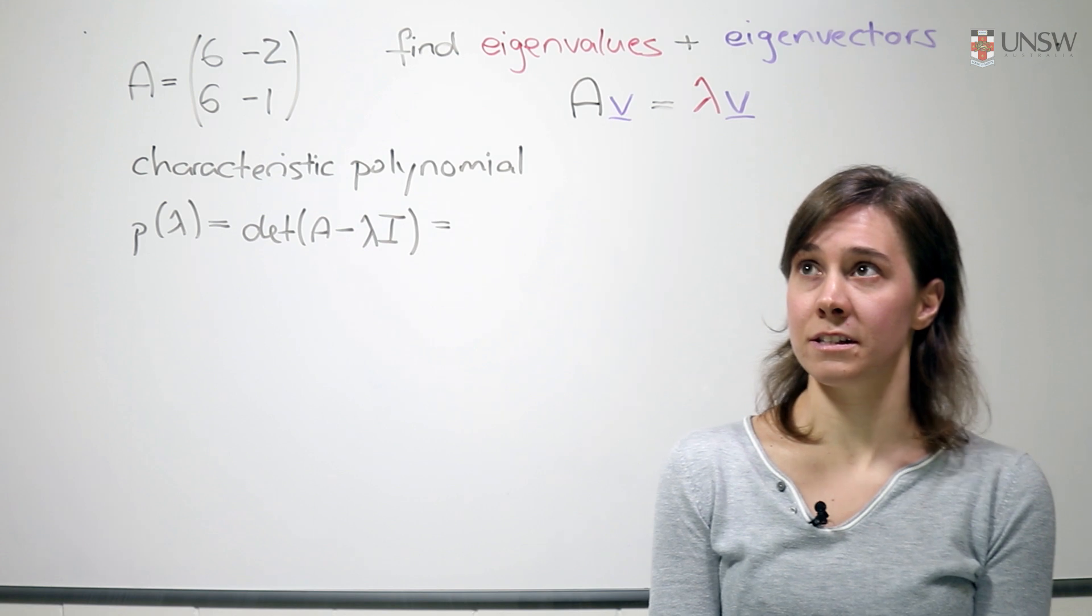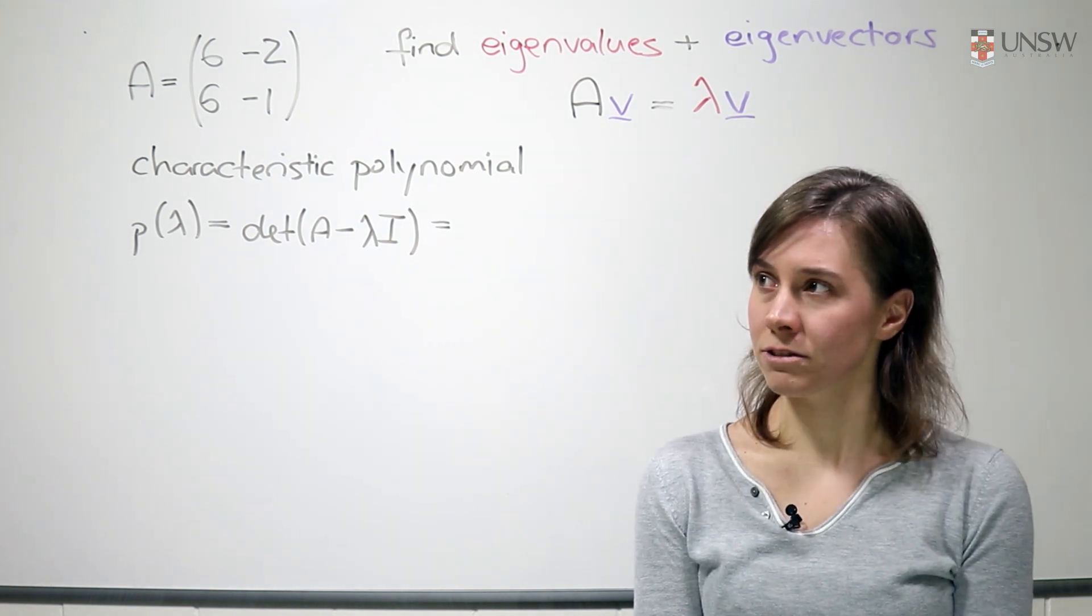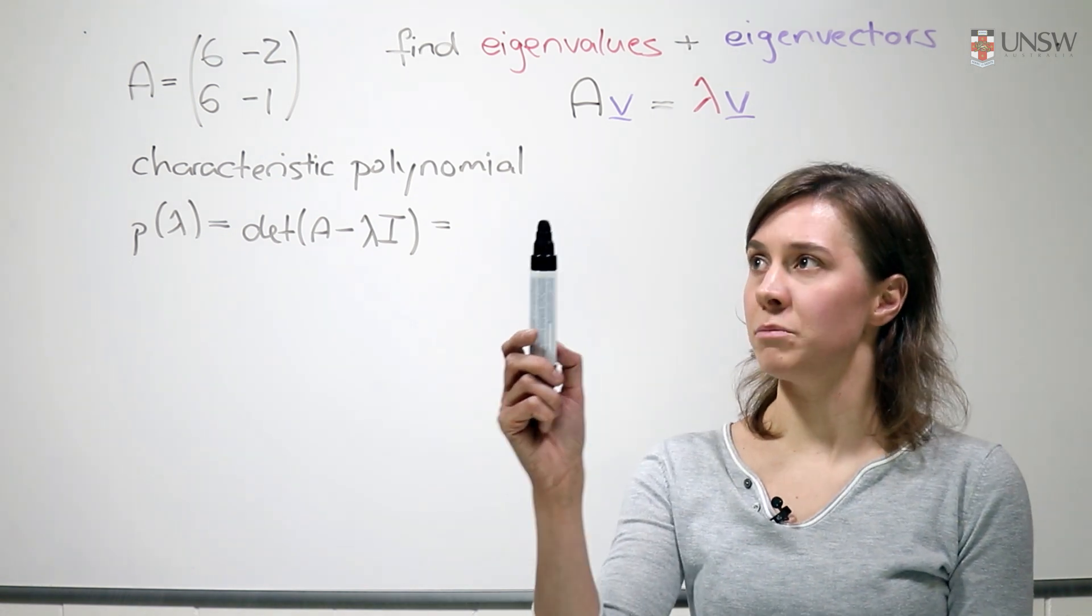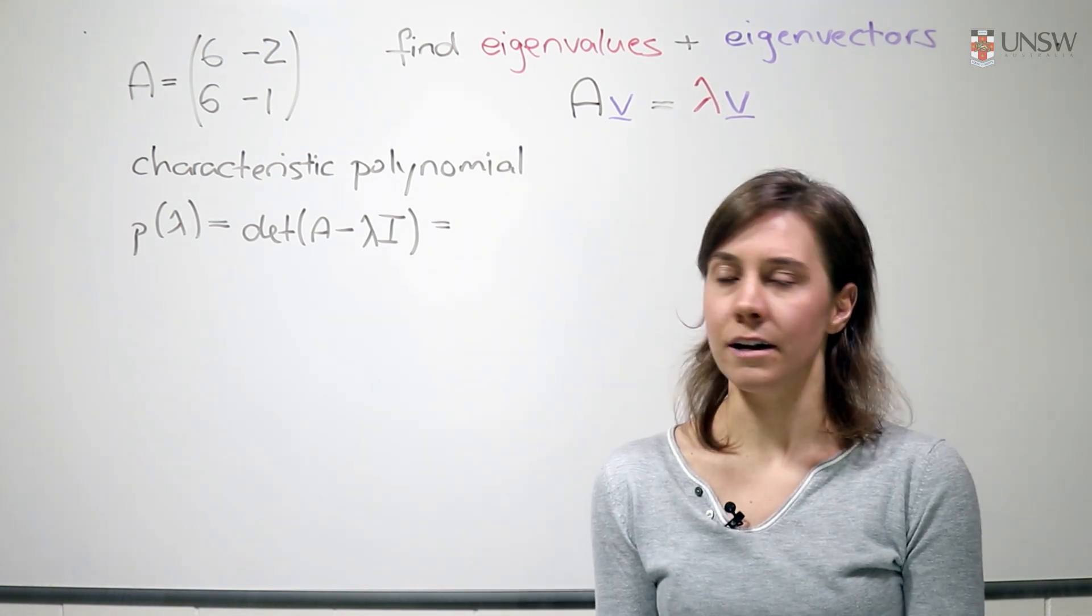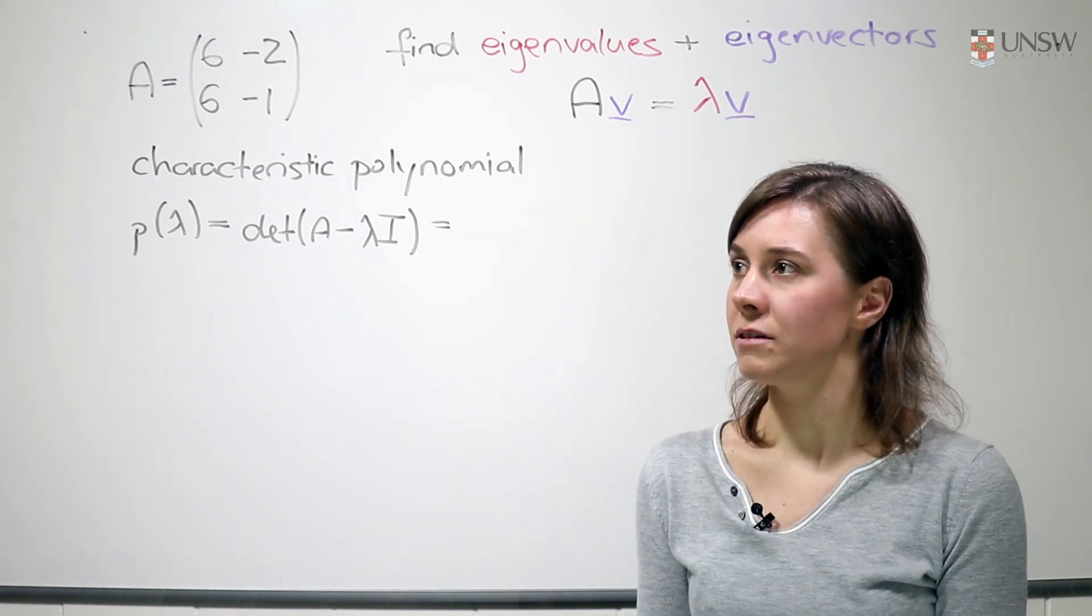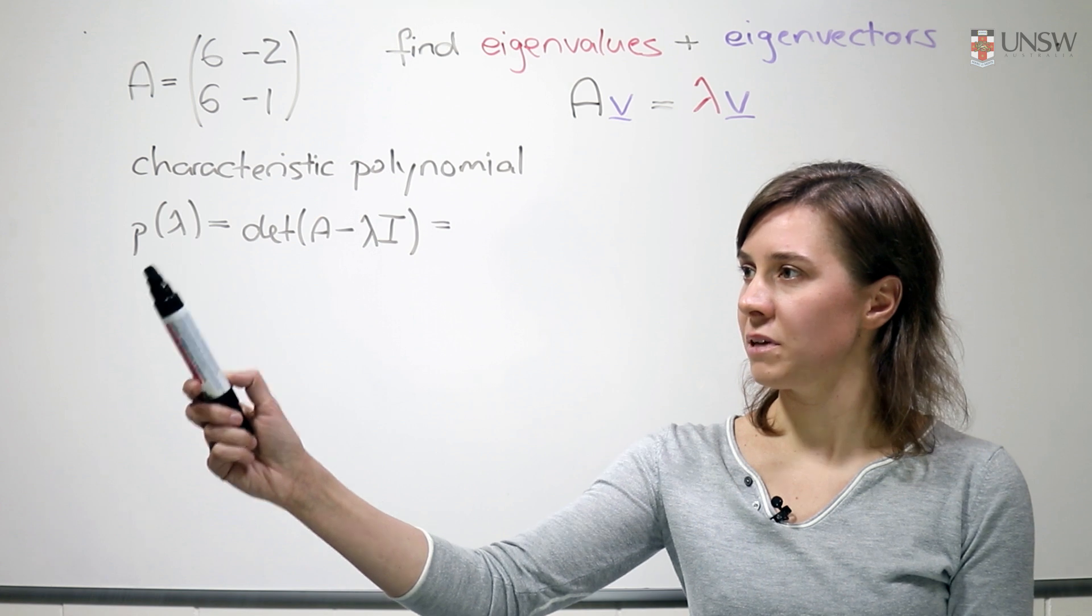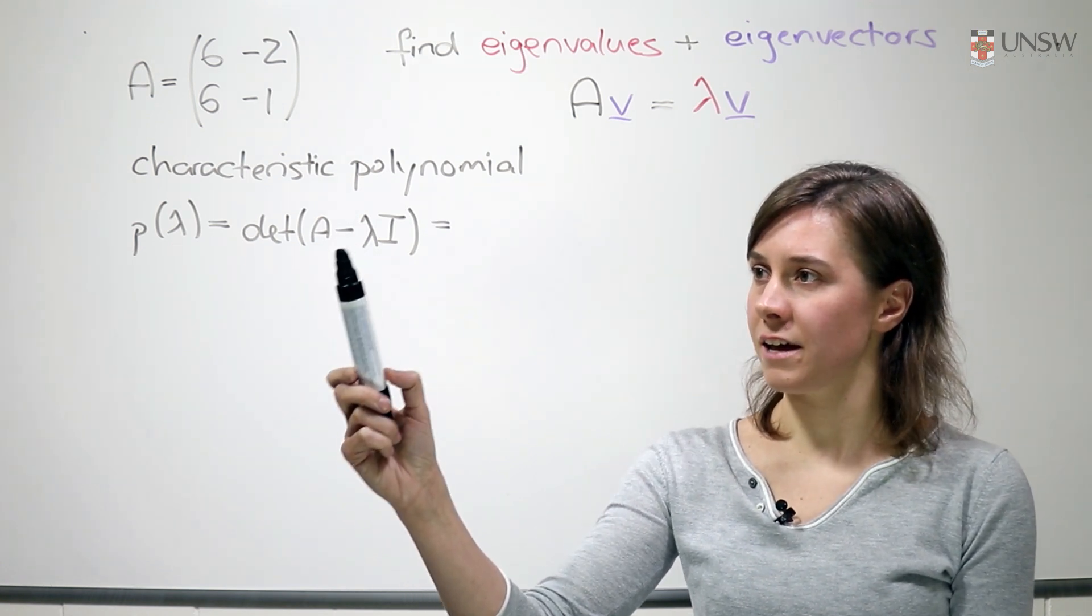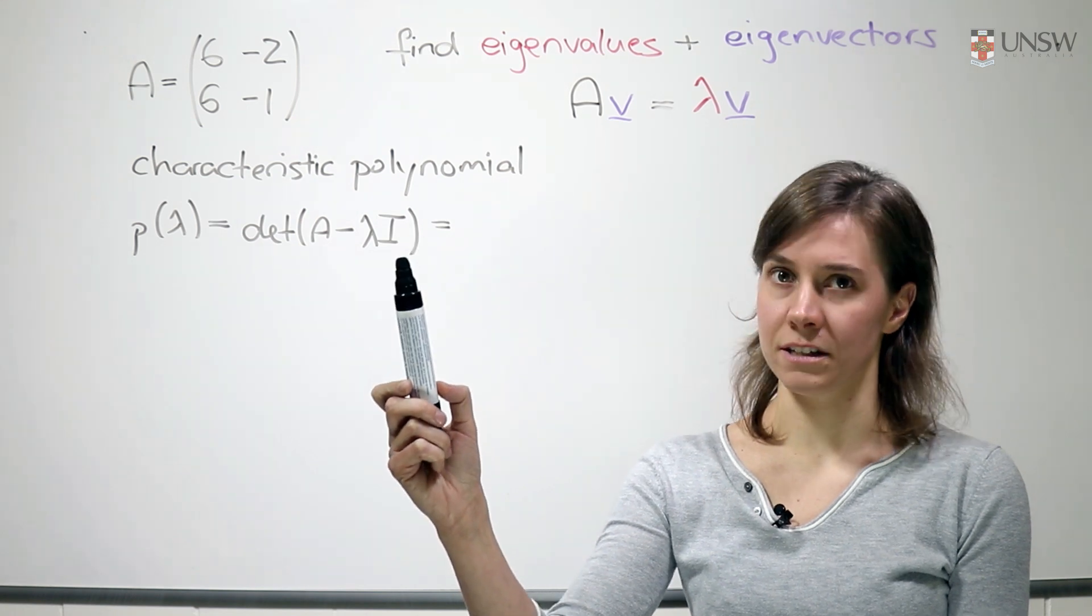So we're going to start by finding the eigenvalues lambda, and we do that as follows. We compute the characteristic polynomial of that matrix and we find the zeros of the characteristic polynomial. The characteristic polynomial P of lambda is defined as the determinant of the matrix A minus lambda times the identity matrix.